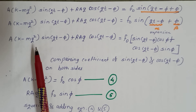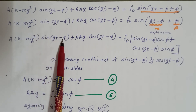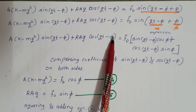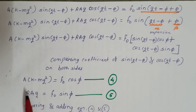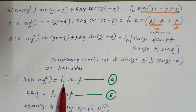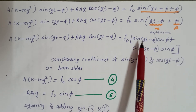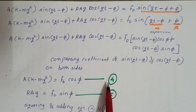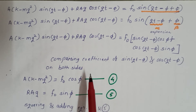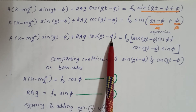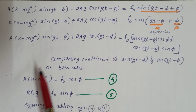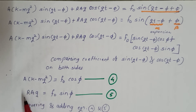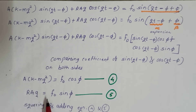Comparing the coefficient of sin(Qt − φ) on both sides, we get: A·(K − MQ²) = F₀·cos φ — equation number 4. Similarly, comparing the coefficient of cos(Qt − φ), we get: R·A·Q = F₀·sin φ — equation number 5.